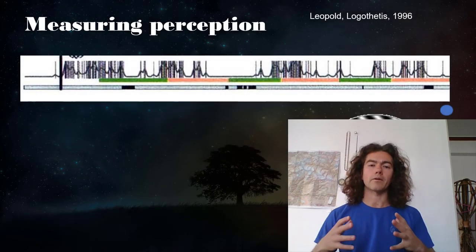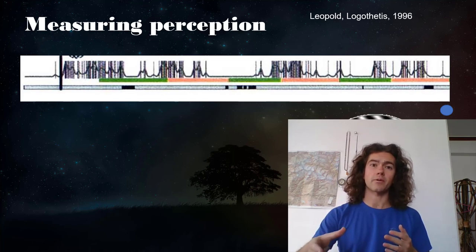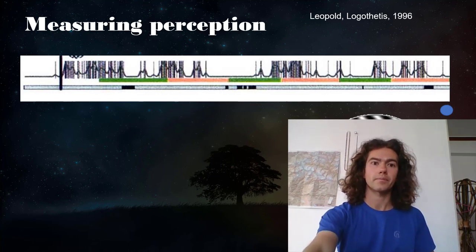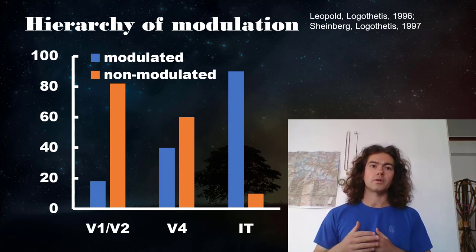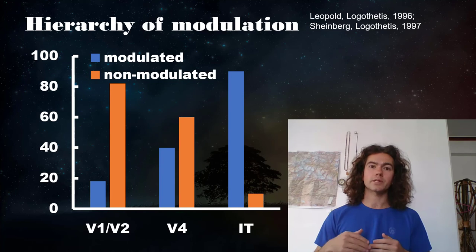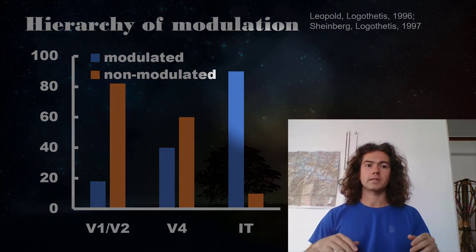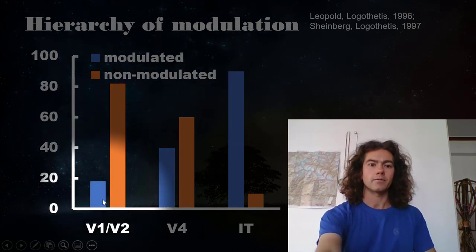So now let's take a look at what happened in area V1, V2, in addition to V4, which we're looking at right now, and then also in area IT. And further, let's take a look at it over the whole population of cells that were recorded. So they bin their cells into either being modulated or non-modulated. So the example cell that we just looked at would be an example of a modulated cell, a cell that changes as a function of the monkey's conscious perception.